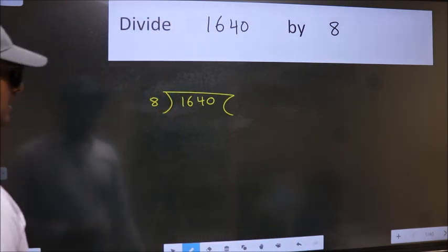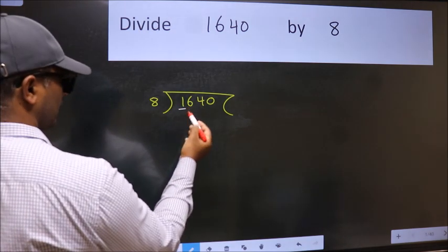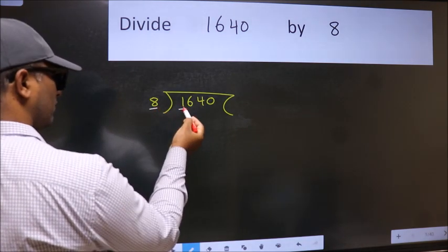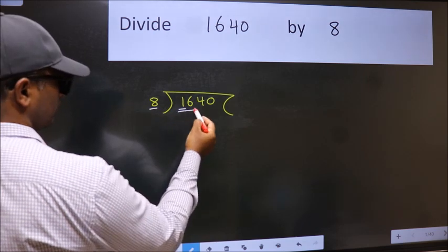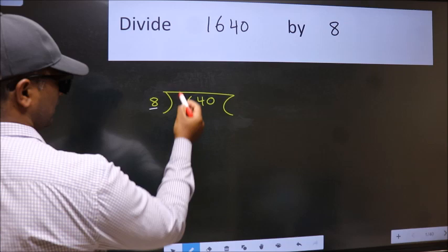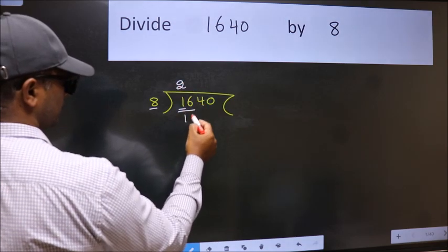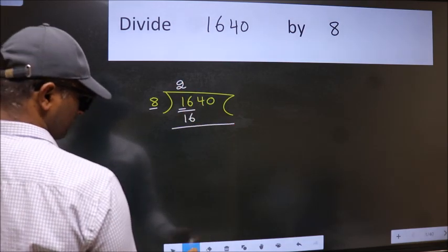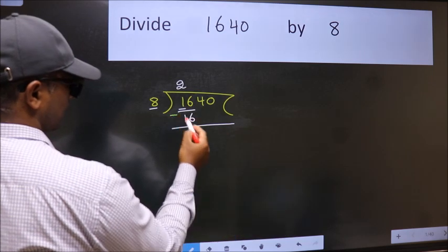Next. Here we have 1 and here 8. 1 is smaller than 8. So take two numbers: 16. When do we get 16 in 8 table? 8 twos 16. Now we should subtract. We get 0.